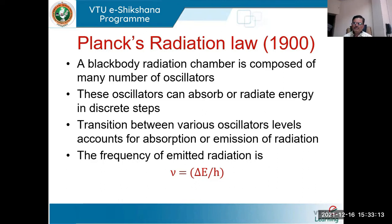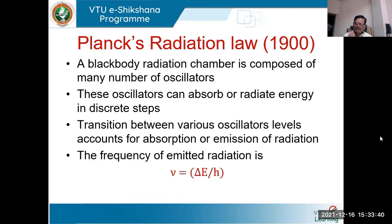Planck overruled the continuous concept: the oscillators present in the black body will absorb or radiate energy in discrete steps. That is, instead of continuous energy exchange, there is discreteness — splitting, demarcation, discontinuous energy levels. Absorption or emission of energy takes place because of transitions of oscillators between various levels. If energy is absorbed, the oscillator moves from a lower energy level to a higher energy level; if it de-excites, it comes back from higher to lower, leading to emission of radiation.